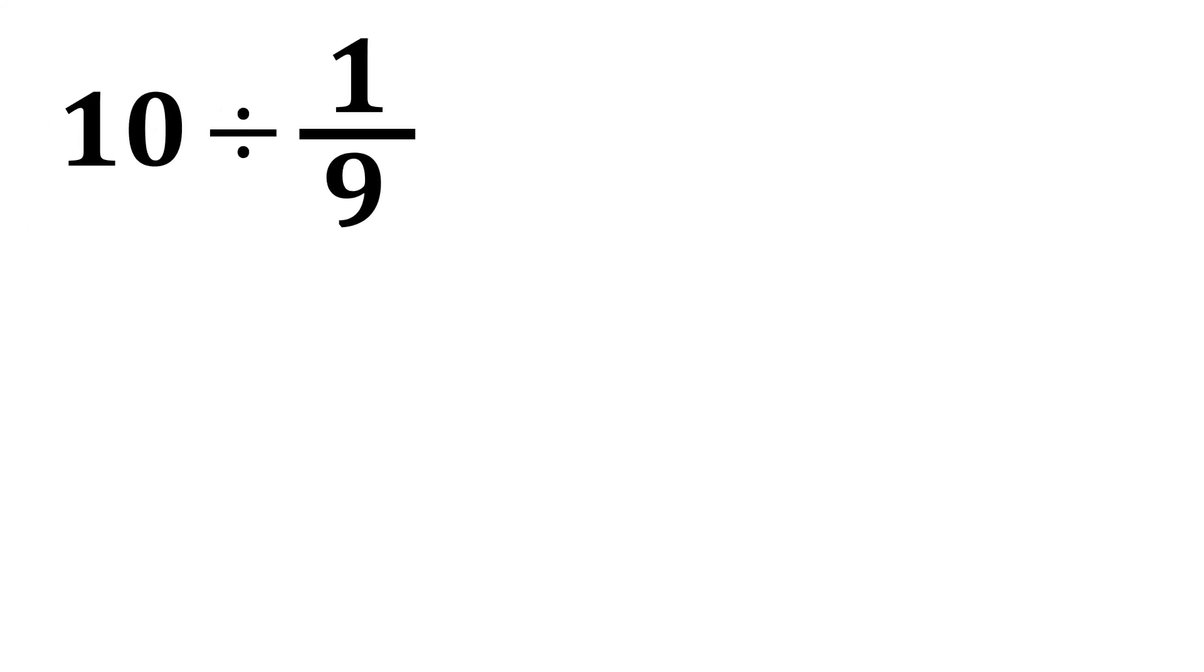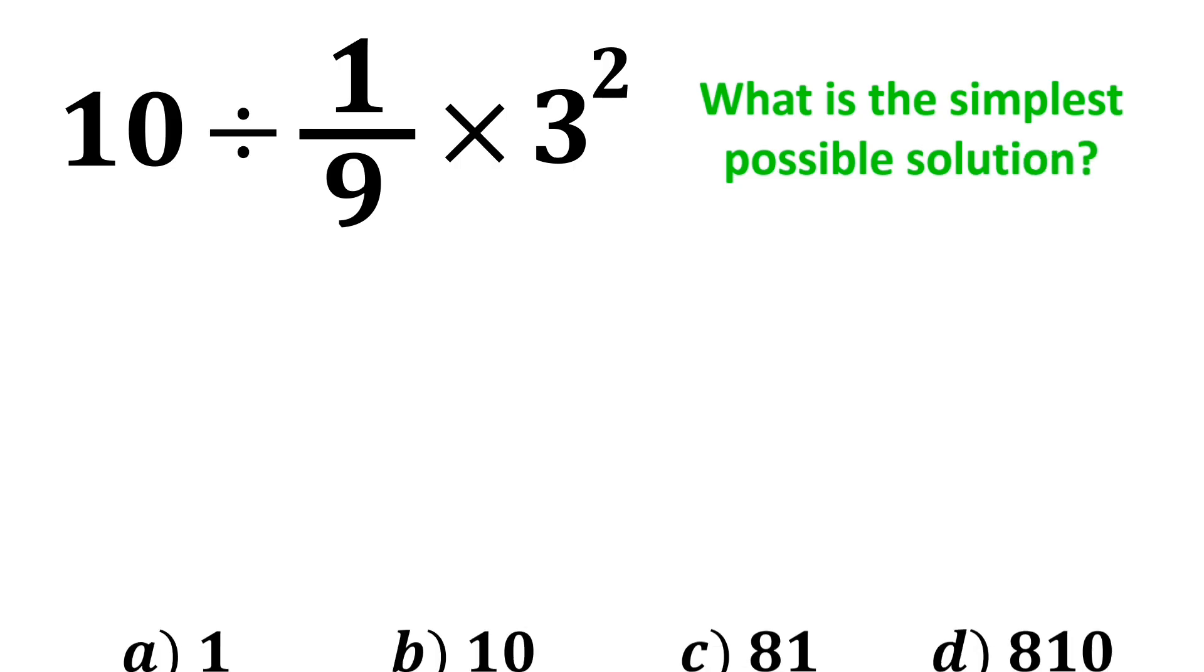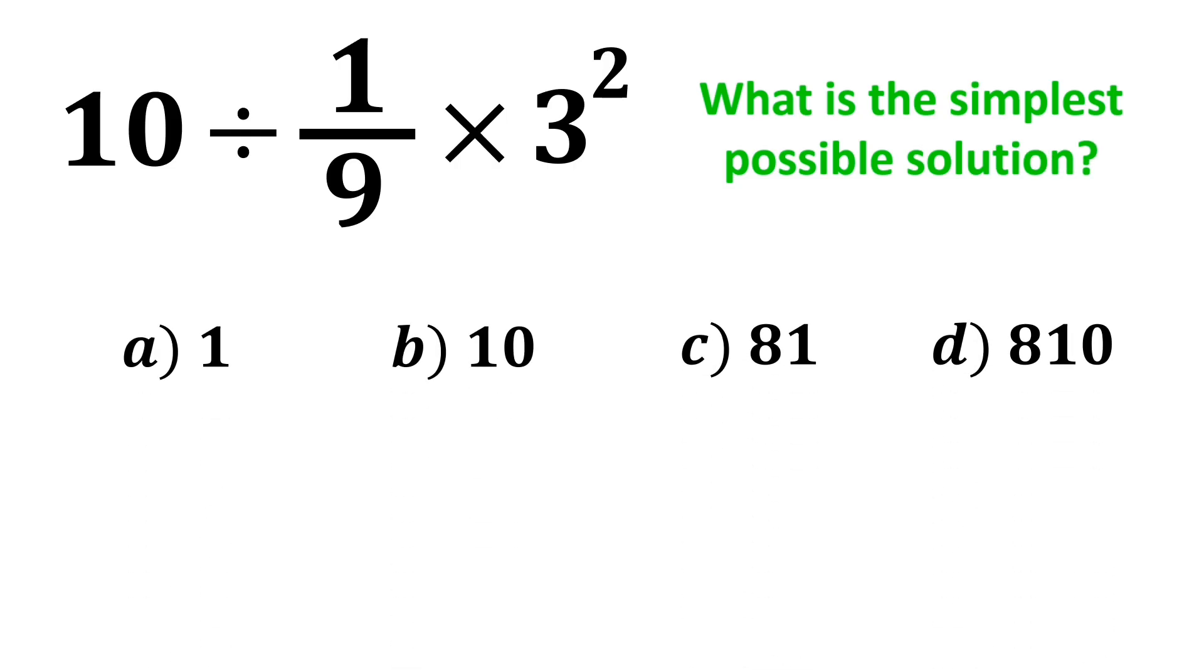If we have the expression 10 divided by 1 over 9 times 3 to the power of 2, then what is the simplest possible solution for this expression? Which option do you think is the correct answer to this question?